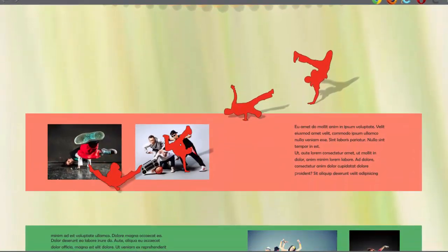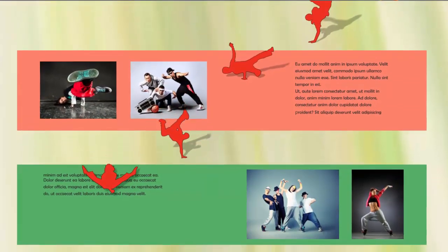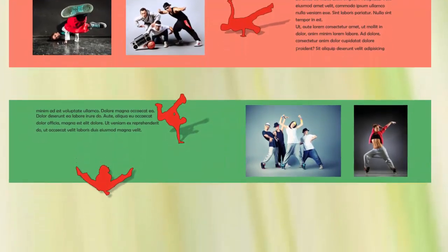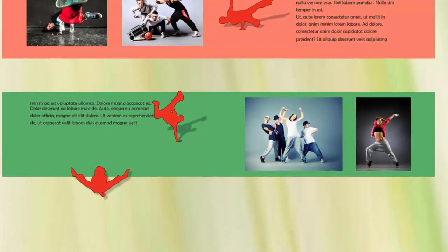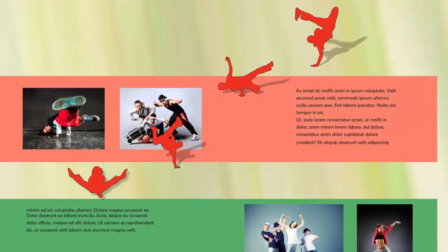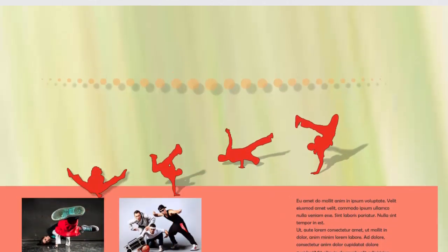So if you look at this page here, you can see that as I scroll down, some of these little figures slide down faster than others. That's because they've got different scrolling speeds assigned to them.